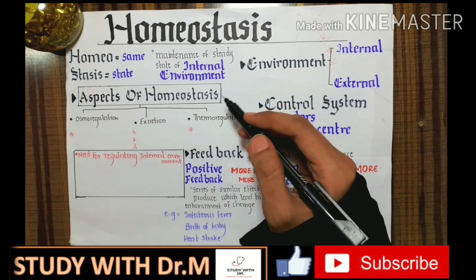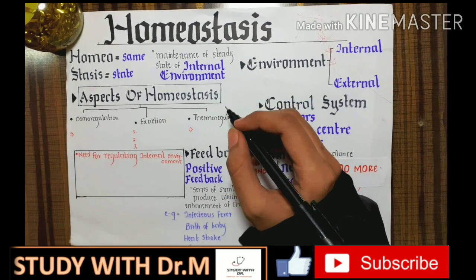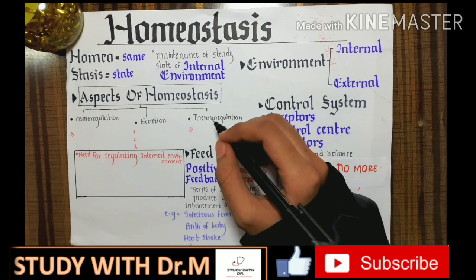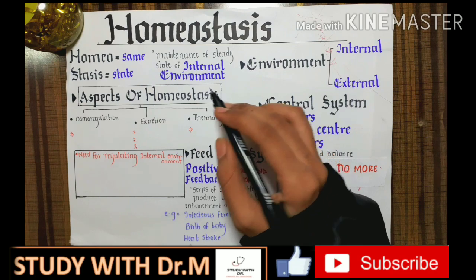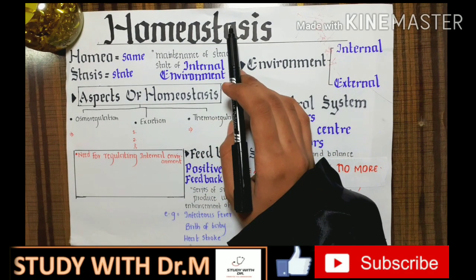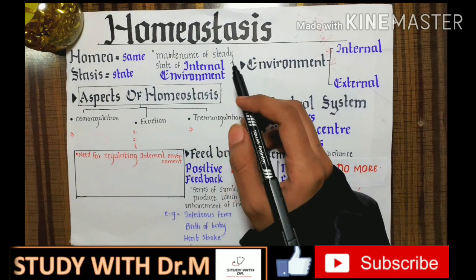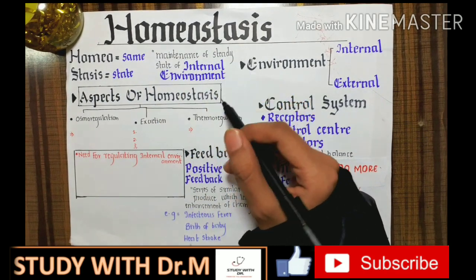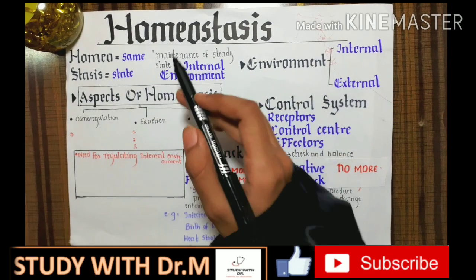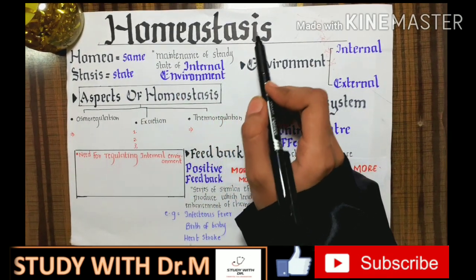For example, the pH of our blood is always the same, always constant. How is it always constant? Because of homeostasis. The proportion of different substances in our urine is always the same, always constant — just because of these regulatory mechanisms of homeostasis.